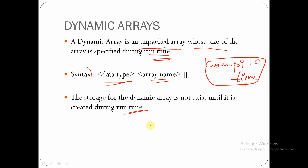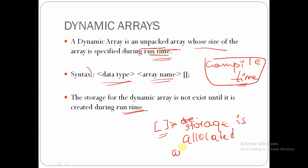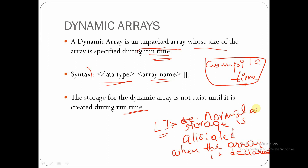Normally, for arrays declared at compile time, the storage is allocated for the elements when the array is declared. This is for normal arrays. In the case of dynamic arrays, the storage is not allocated — it does not exist until it is created during runtime.